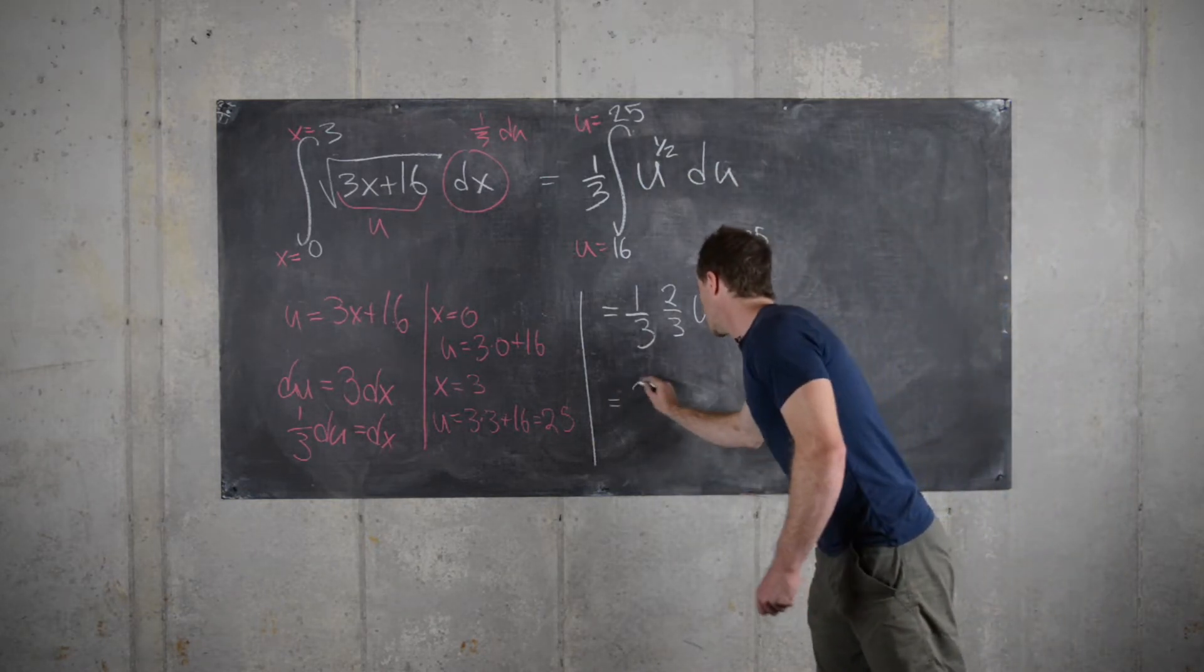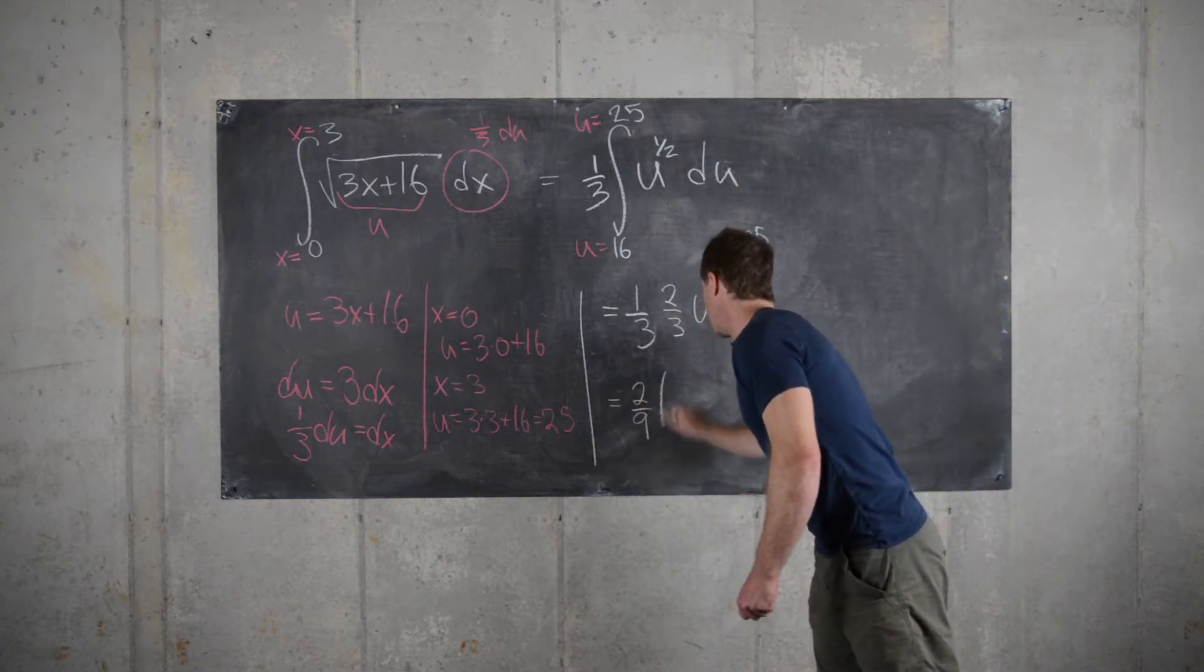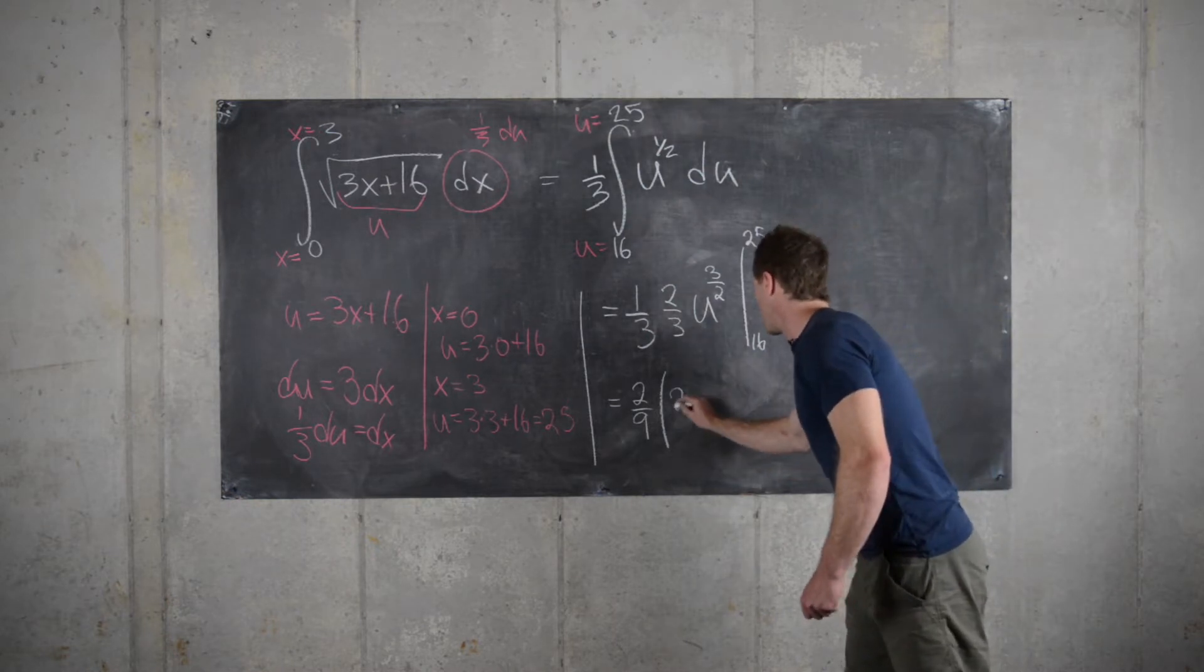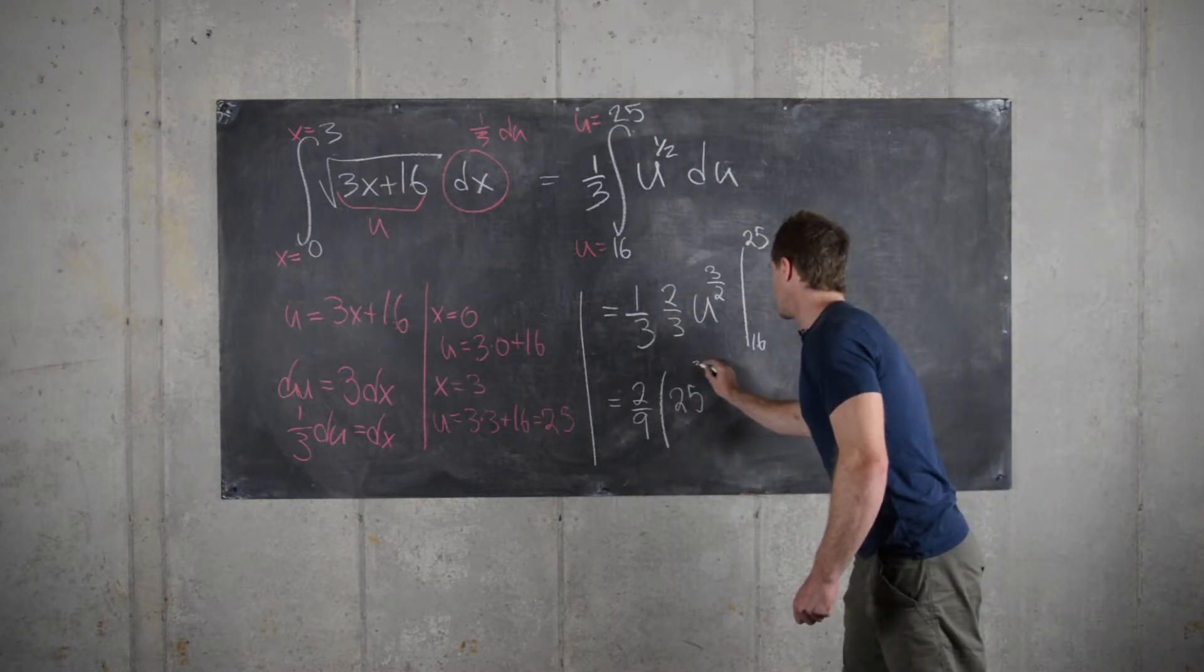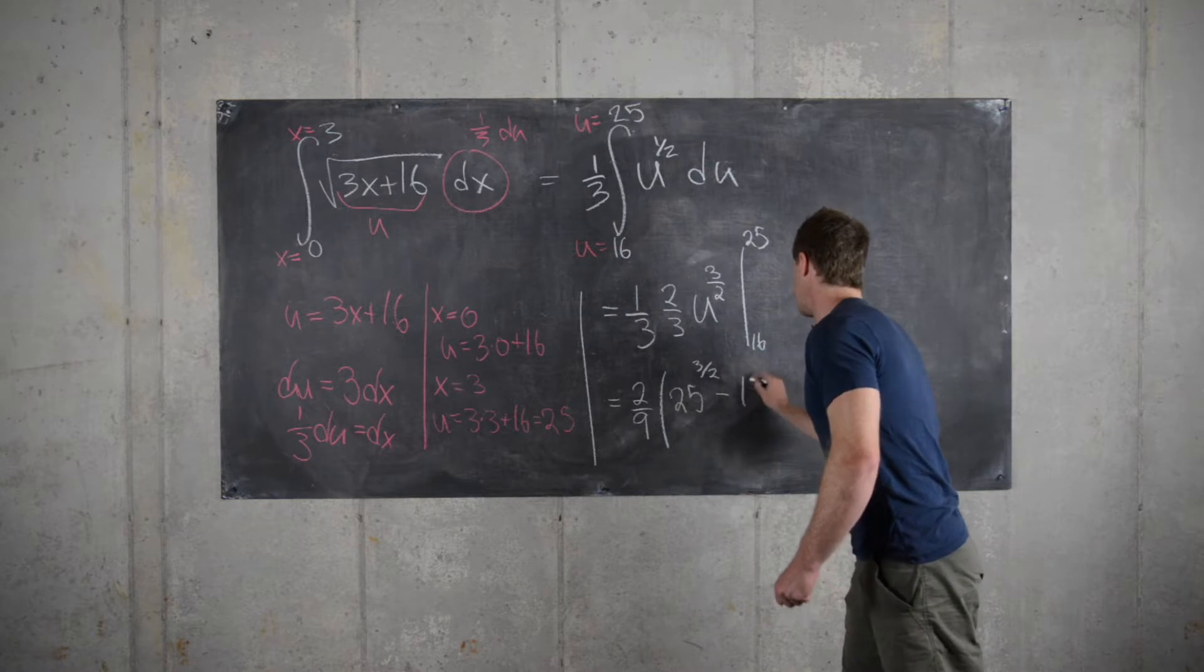That gives us two over nine, and then we have 25 to the three-halves minus 16 to the three-halves.